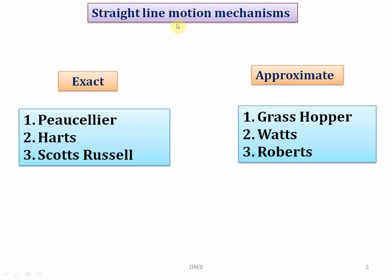Straight line motion mechanisms can be classified into two types: first, exact straight line motion mechanisms, and second, approximate straight line motion mechanisms. Exact straight line motion mechanisms are those in which the output point or link moves along a straight line exactly, and in approximate straight line motion mechanisms, the output point moves along a straight line approximately. Types of exact straight line motion mechanisms are Peaucellier mechanism, Hart's mechanism, and Scott Russell mechanism. Approximate straight line motion mechanisms are Grasshopper mechanism, Watt's mechanism, and Roberts mechanism.